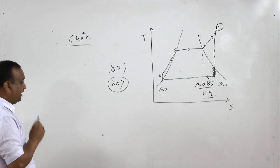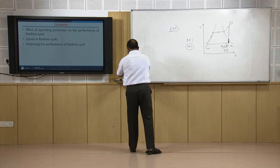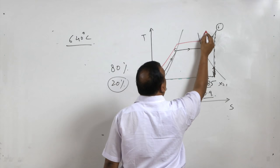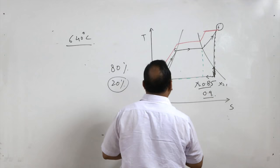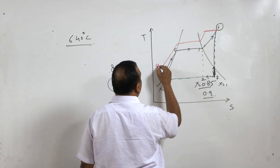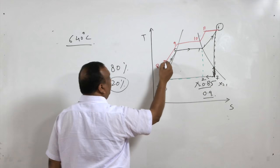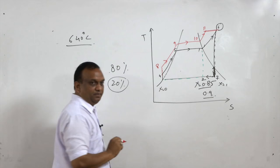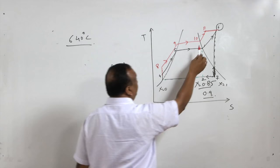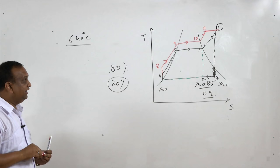Another way of improving performance is to increase boiler pressure while maintaining the same maximum temperature at both states 6 and 11. In this case the efficiency will be higher because the mean temperature of heat addition is higher, even though the temperature at states 6 and 11 is the same.